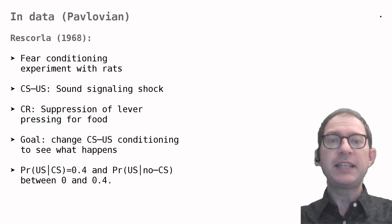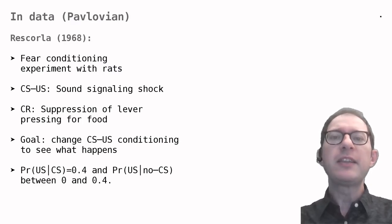What Rescorla did that is interesting to think about now is that he ran different groups of rats with different CS-US contingencies. He used 10 different ones, but we'll look at 4 for brevity.